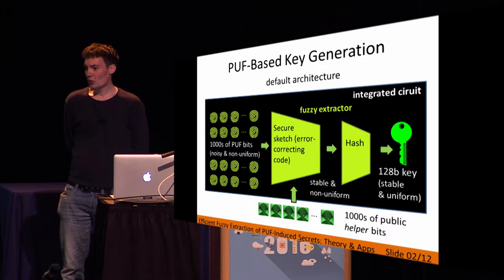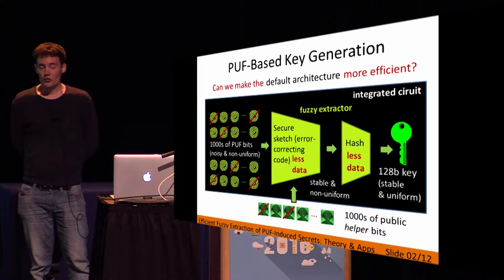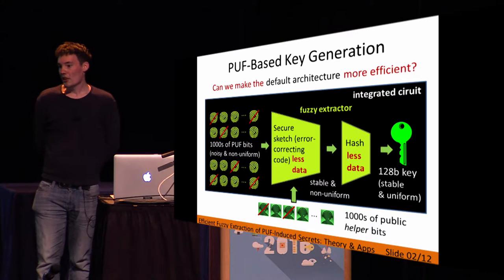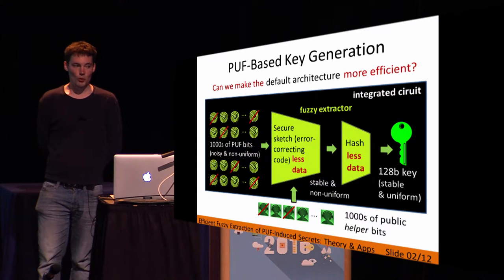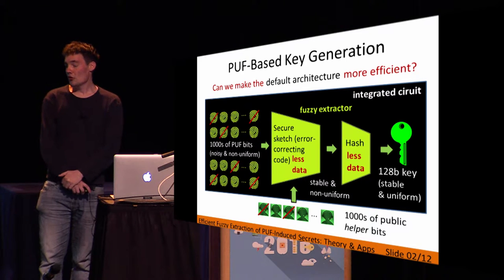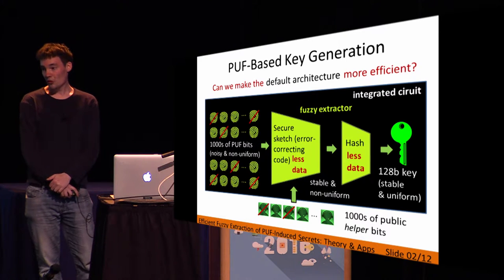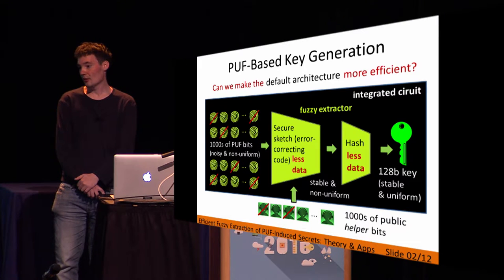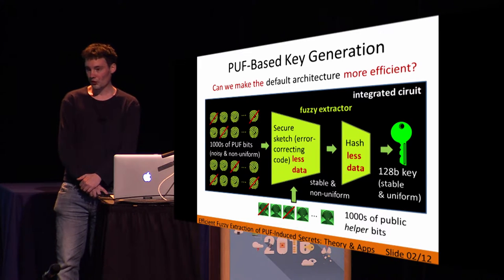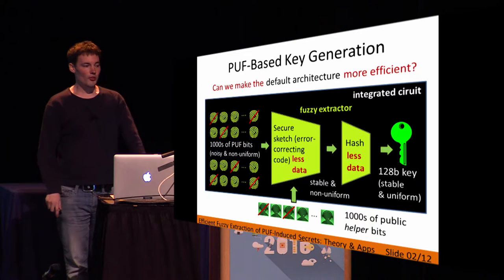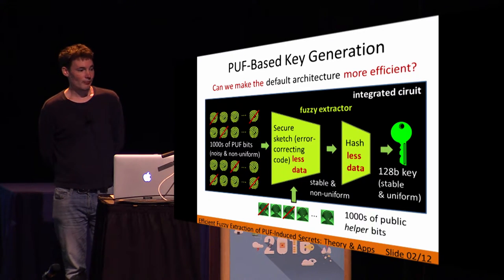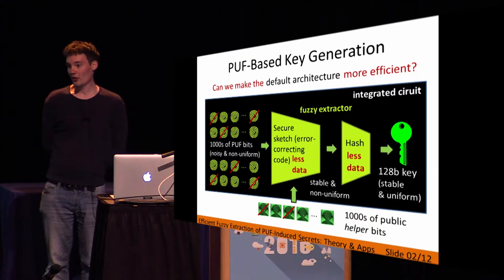The second step of the fuzzy extractor is a hash function, where we basically downsize the secret so that we go from non-uniform to uniform. The question that we address is: can we make this default architecture more efficient? Without making any changes to the design of the architecture, can we use less PUF bits and also less helper data bits? Because with less data, the secure sketch and the hash both have to process less data.